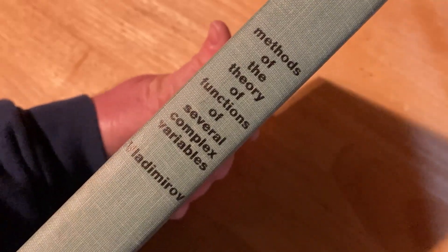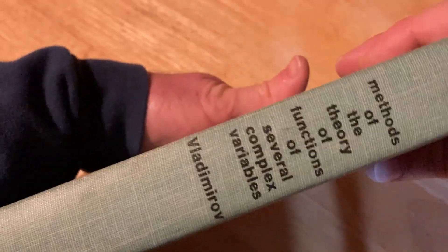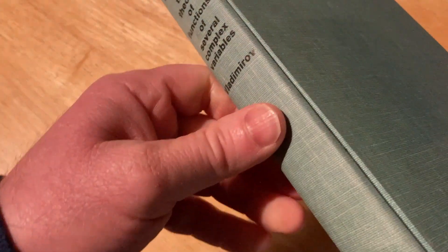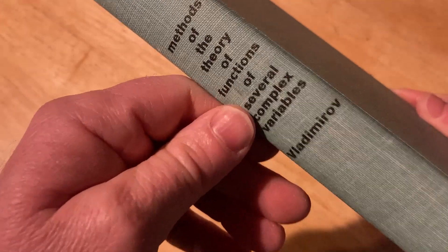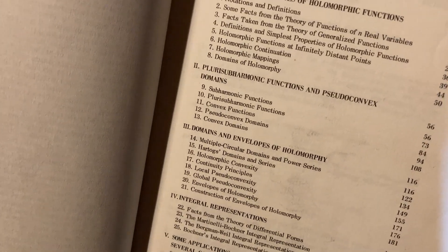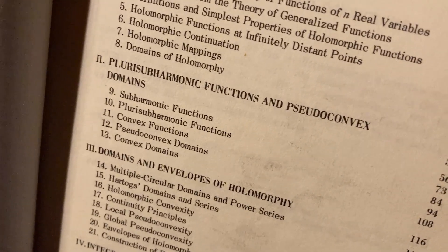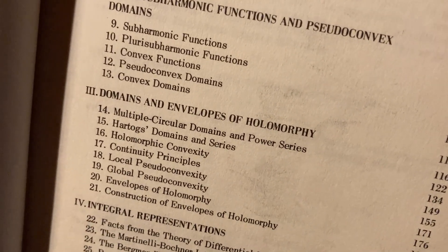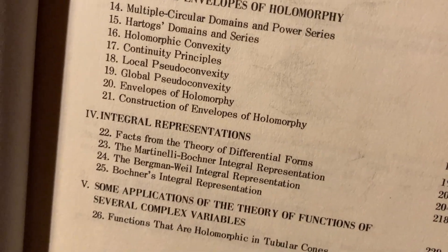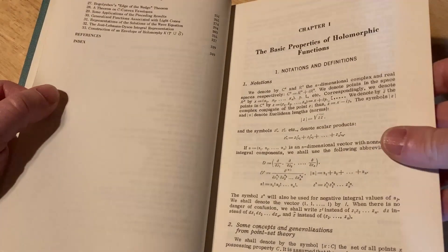This is something that is taught sometimes. It's called Methods of the Theory of Functions of Several Complex Variables. If you've taken complex variables and you've studied that, you might be wondering, what is it like to study the theory of functions of several complex variables? And this book by Vladimirov can tell you that. This is a very advanced book. It is definitely not for beginners. Here's just a quick look at the contents. This is math that probably most people have never seen. Plurisubharmonic functions and pseudoconvex domains. Domains and envelopes of holomorphy. Integral representations. This is pretty advanced stuff.